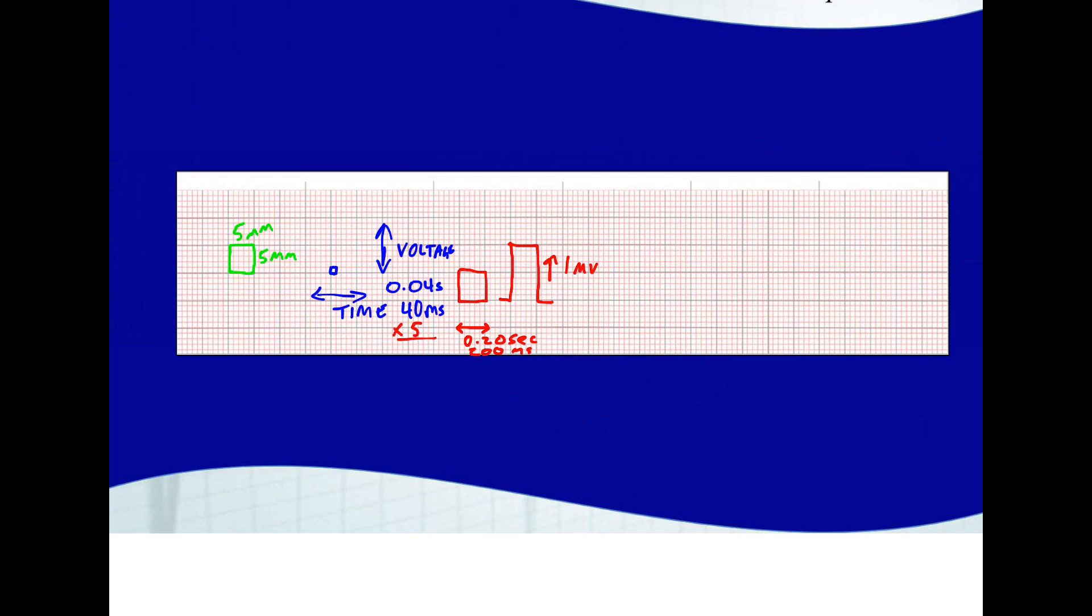If you look at these lines that come up past the grid, those are showing us every second. They're five large boxes wide. So this is one second, two, three, four, five, and six. We have six seconds for this EKG strip, and that is a very standard duration.